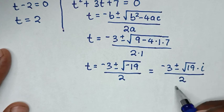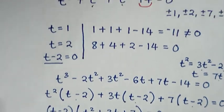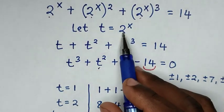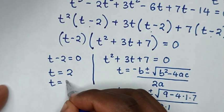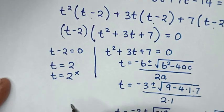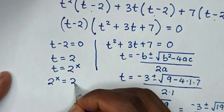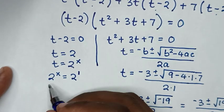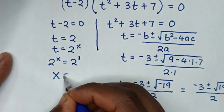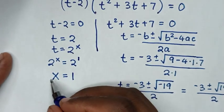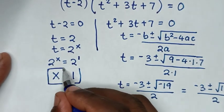So after all, we get these values of t. Recalling that we let t equal to 2 power of x, from t equal to 2 power of x we compare these two equations. So it will be 2 power of x equal to 2, whereas 2 is the same as 2 power of 1. Now we have the same base so we compare the powers, giving x equal to 1. So this is one value of x in this problem.